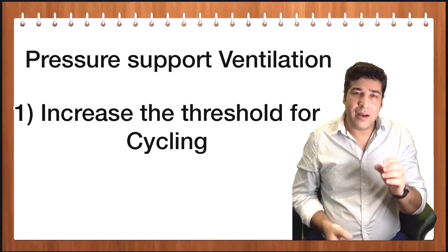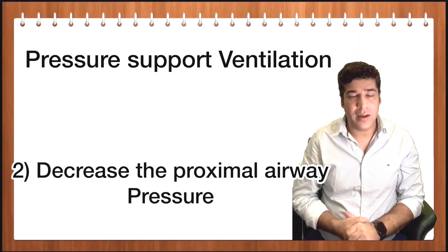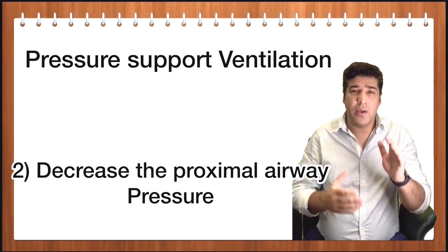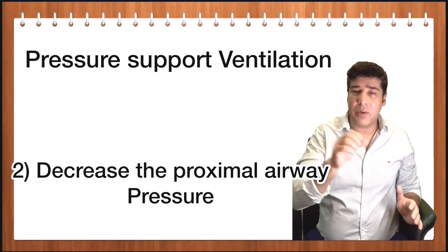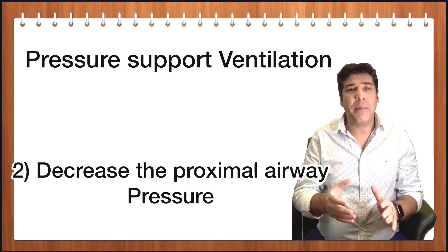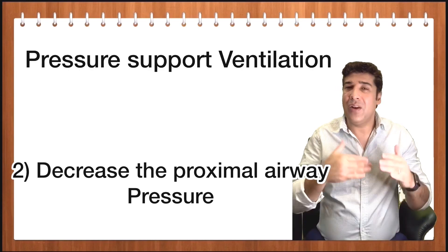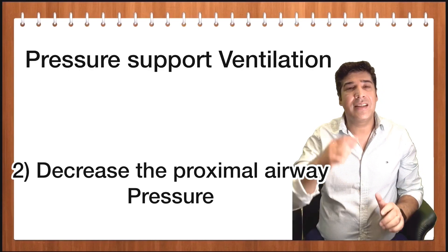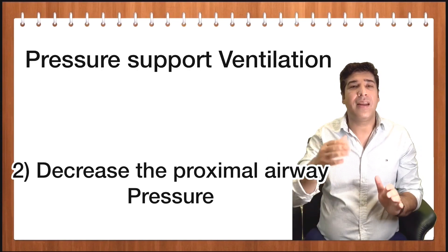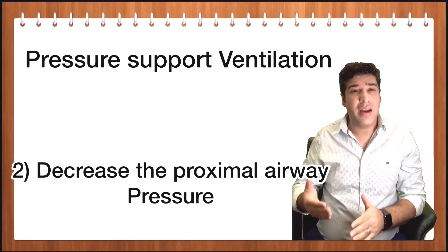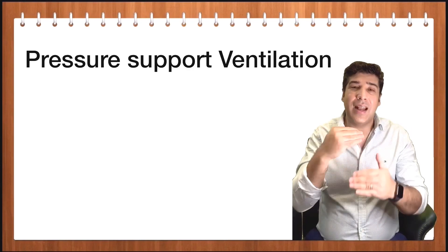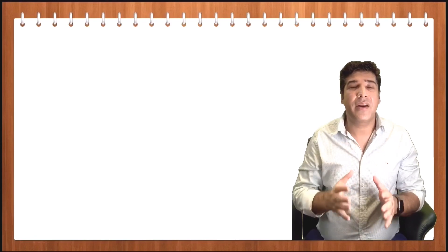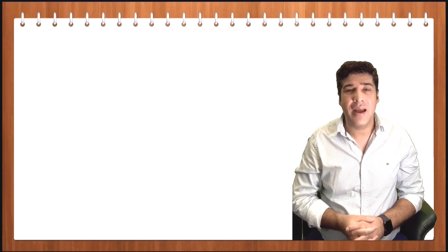The second thing you can do in pressure support ventilation is simply decrease the proximal airway pressure. With this, lower tidal volumes will be generated. When lower tidal volumes are generated, the consequence is that the effect of gas trapping will be minimized. By this, you can at least decrease the effect of auto PEEP that is happening as a result of gas trapping.